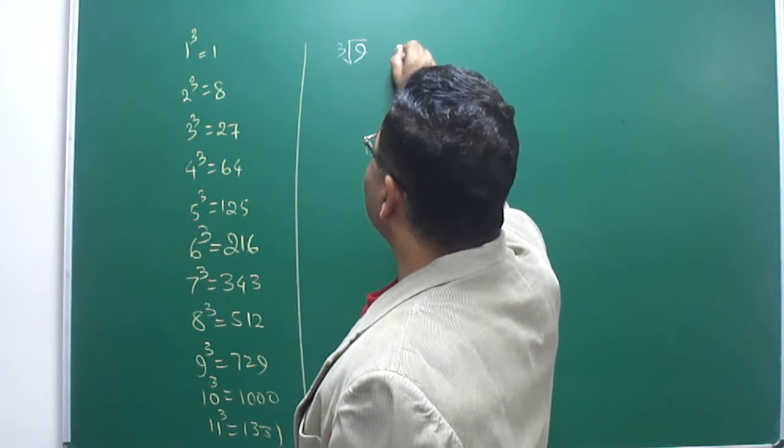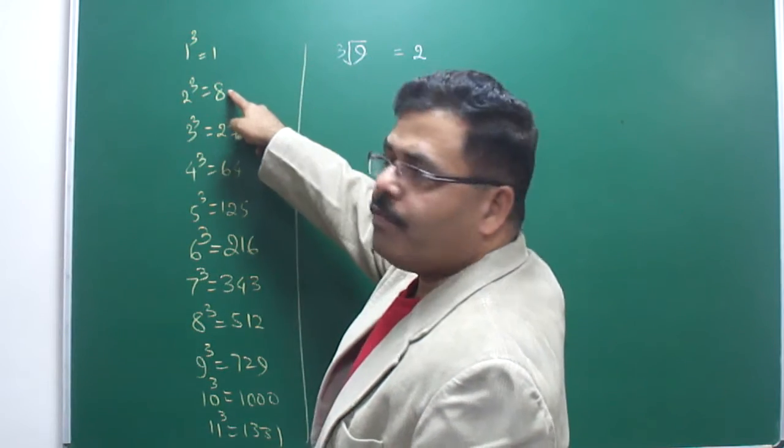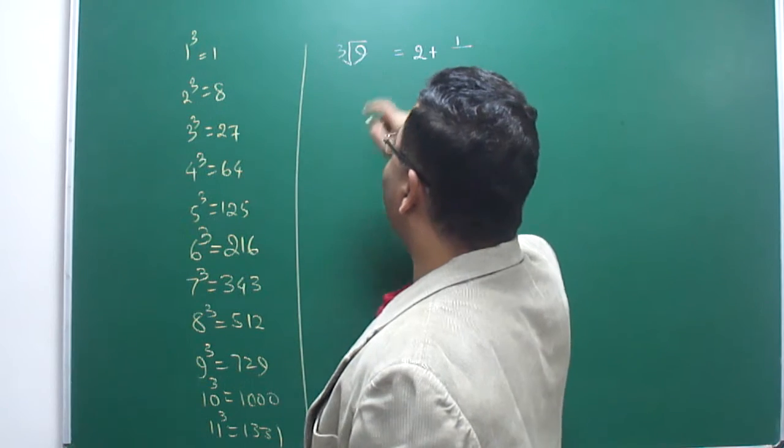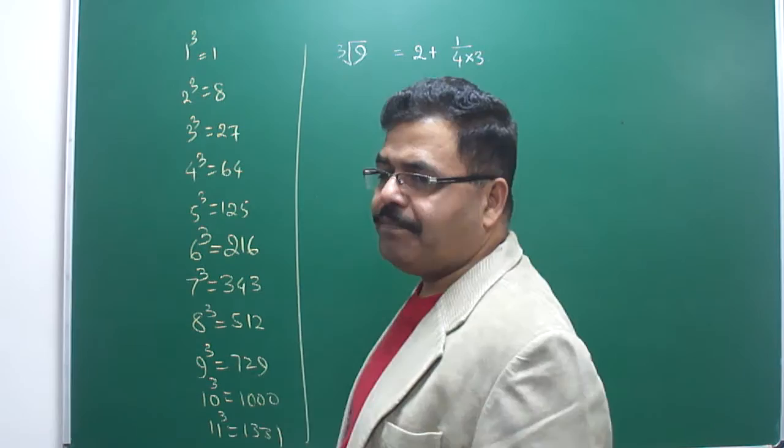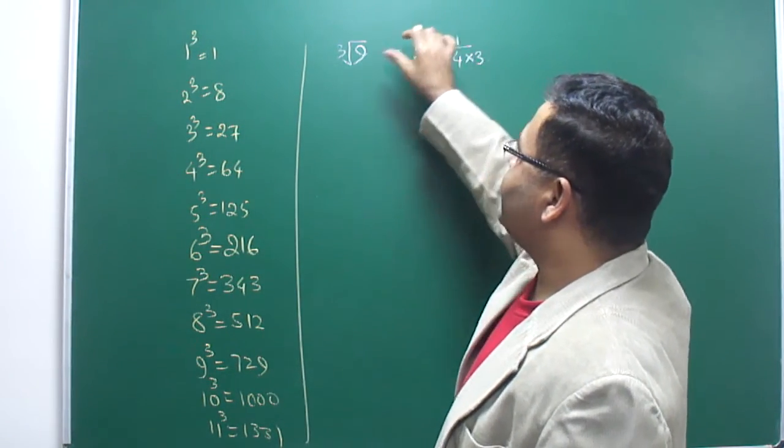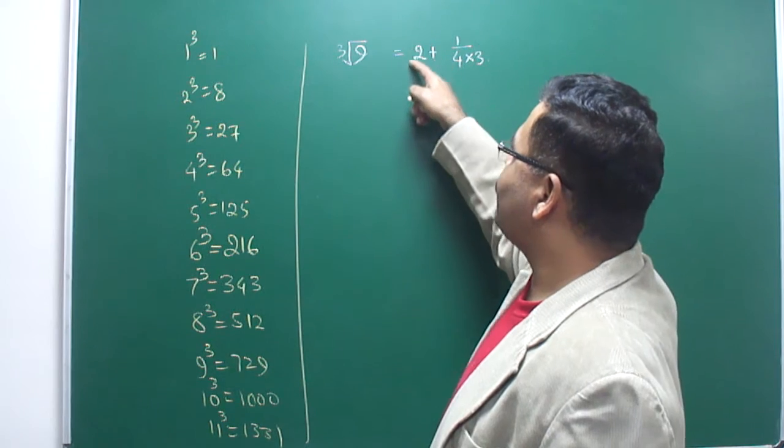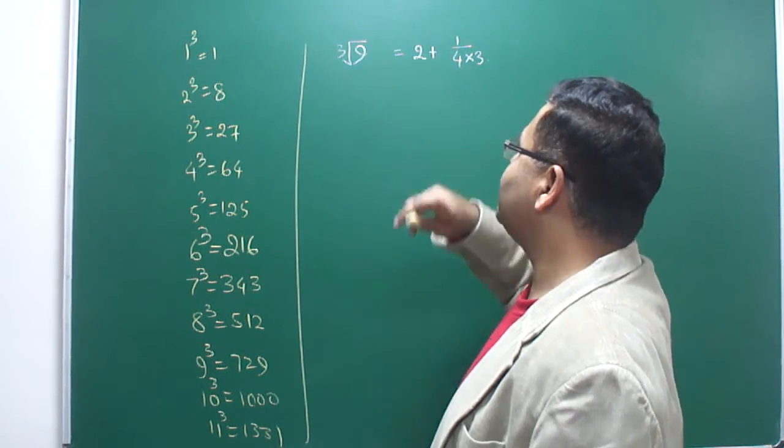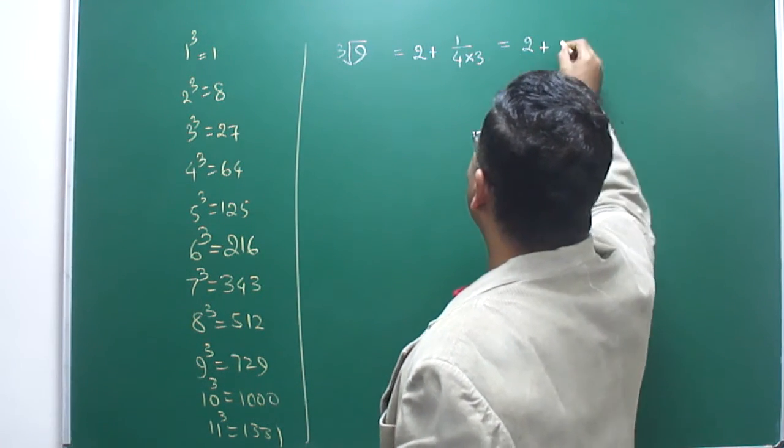So the first basic number I should write here is 2. Now, how much is it more than 8? It's 1. So I should write here 2 plus 1 divided by the square of this number, that is 4, multiplied by 3. In the numerator I have to write the difference, and in the denominator I have to write the square of this number multiplied by 3—that is thrice the square of this number.